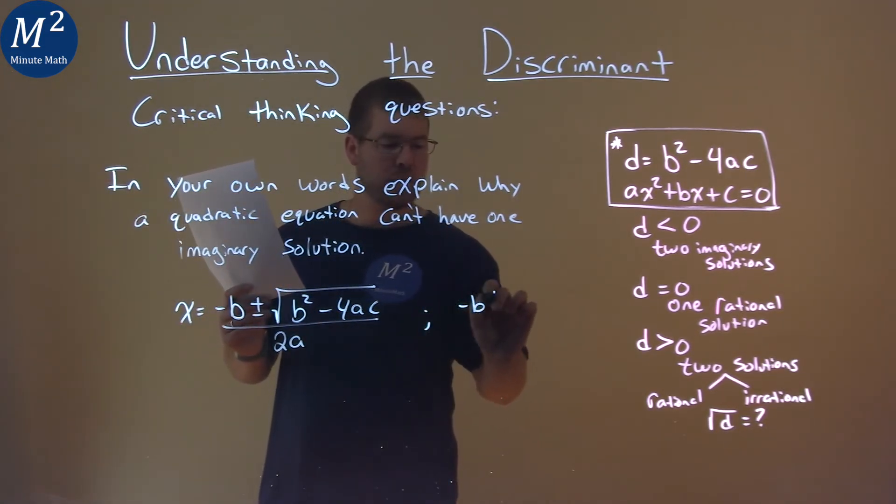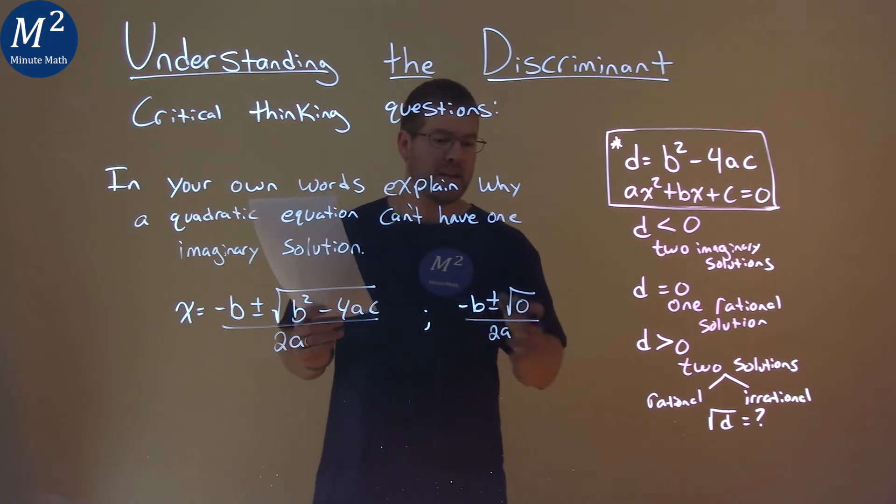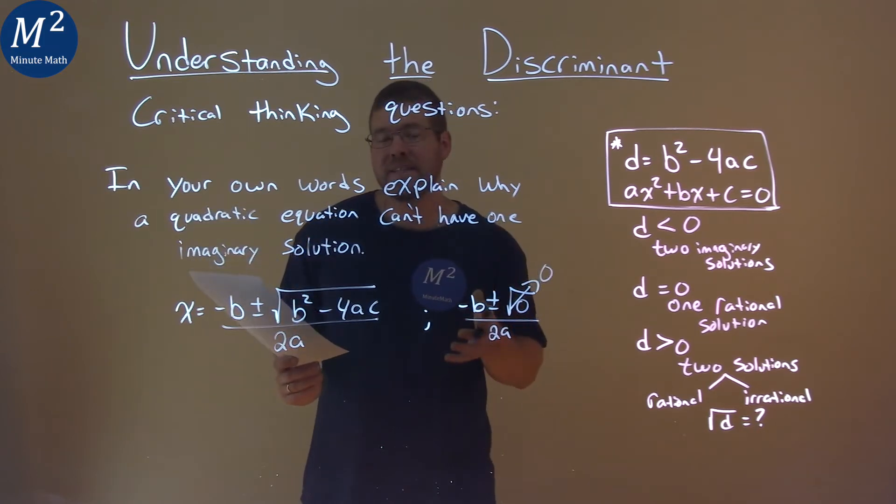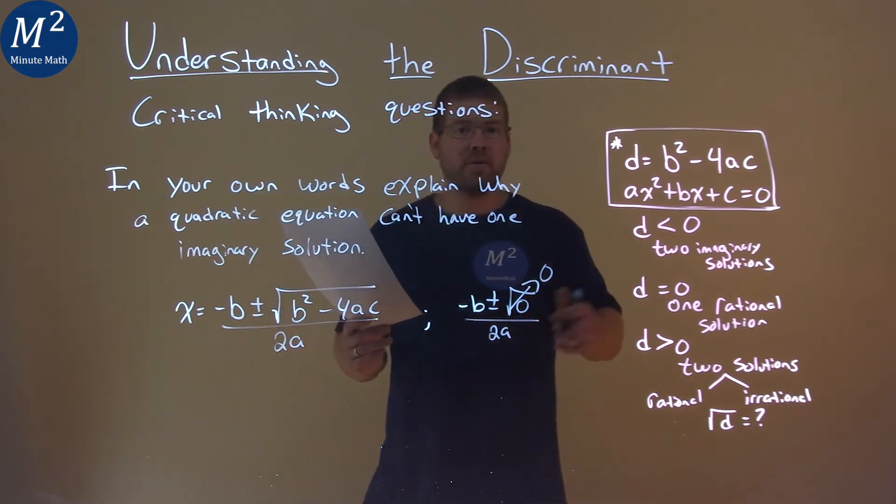We would have negative b plus or minus the square root of zero over 2a then, right, if the inside of the discriminant was zero. Well, that's going to clearly give us one rational solution because square root of zero is zero and plus or minus zero doesn't change anything. It's plus zero, minus zero, it's going to be the same value, so we'll have one solution.